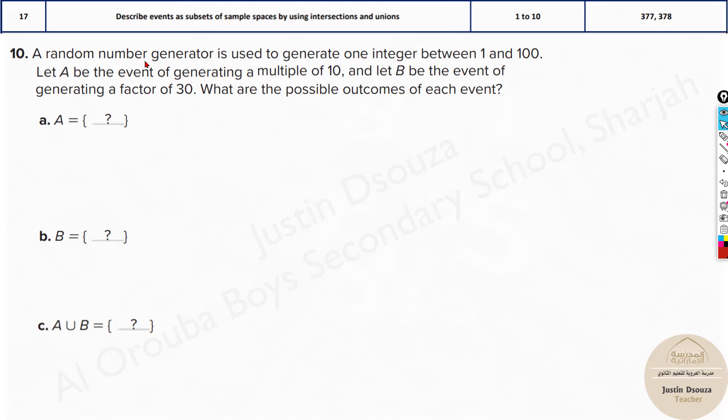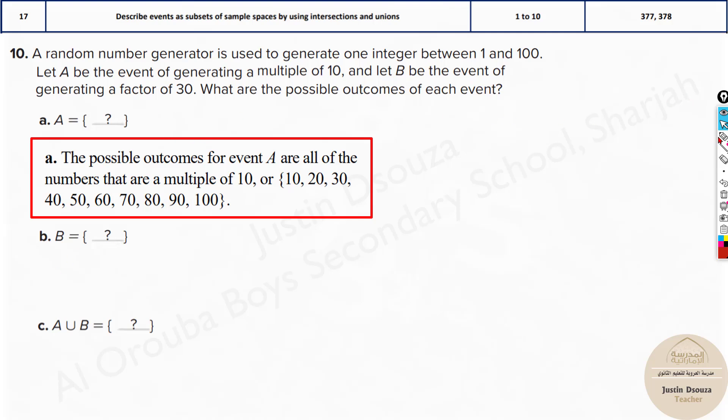And the last problem in this topic. That's the question 17. Again, a random number generator is used. But this time we are generating integers from 1 to 100. Let A be the event generating multiples of 10. And B be the event of generating a factor of 30. Now this is important. I'll come to it in a while. What are the possible outcomes of each event? Now multiples of 10 is simple. 1 to 100. 10, 20, 30 and so on till 100. Now what are the factors?